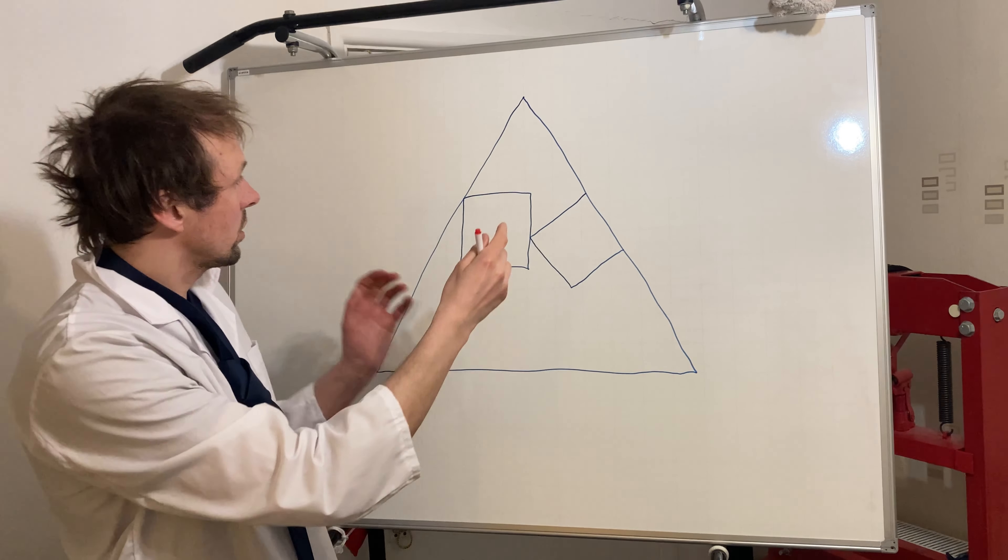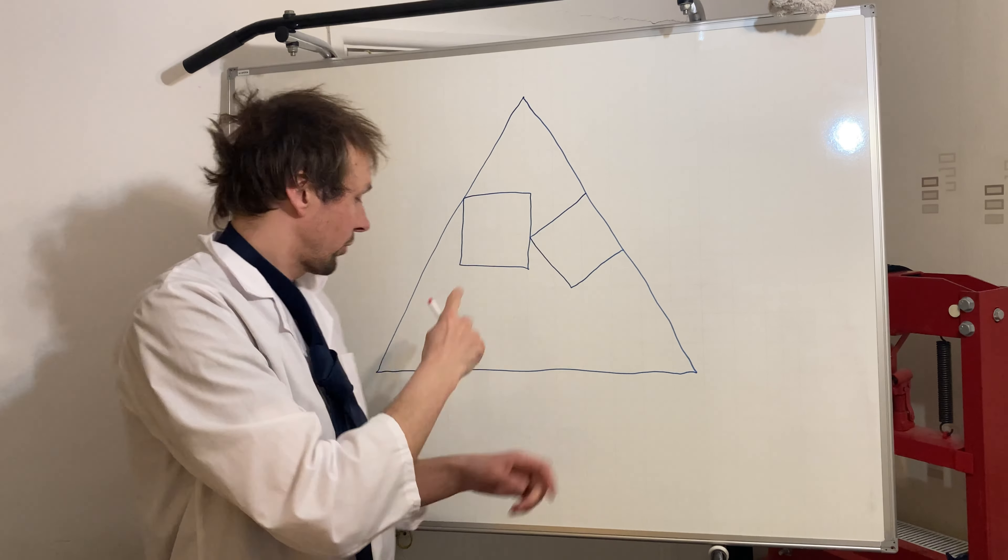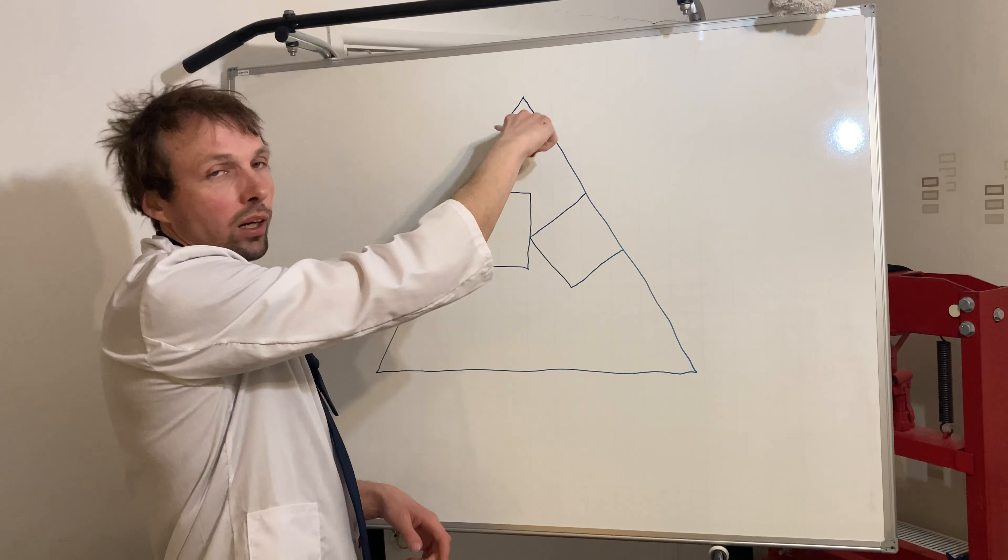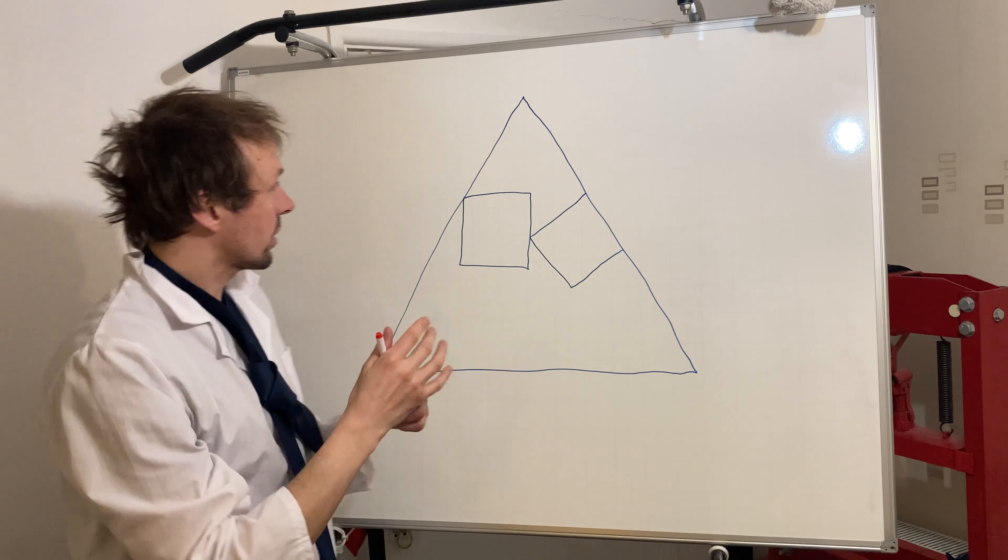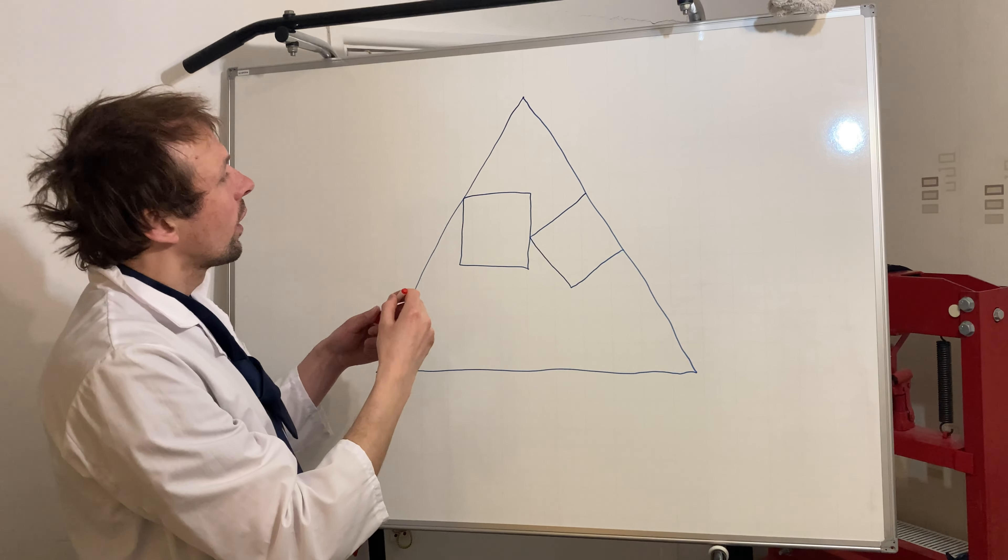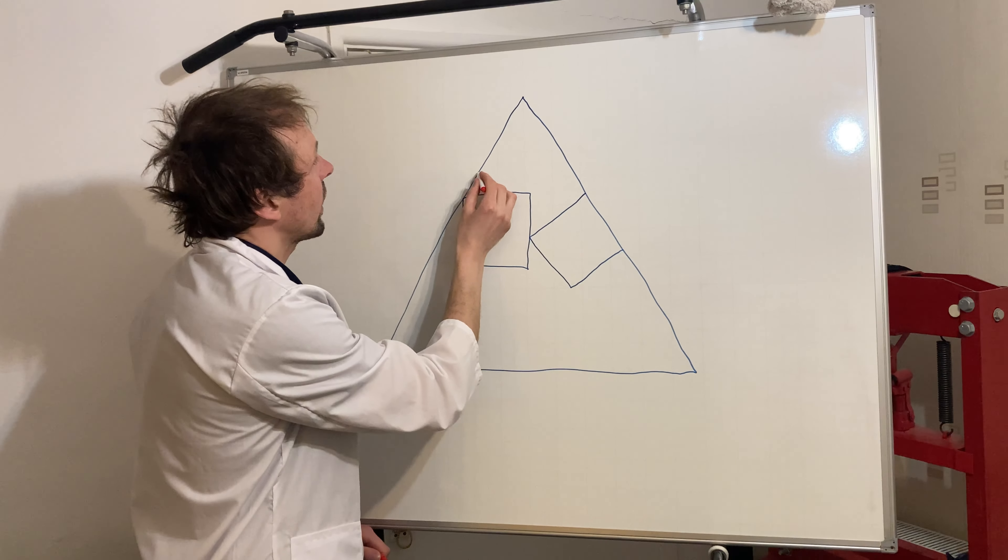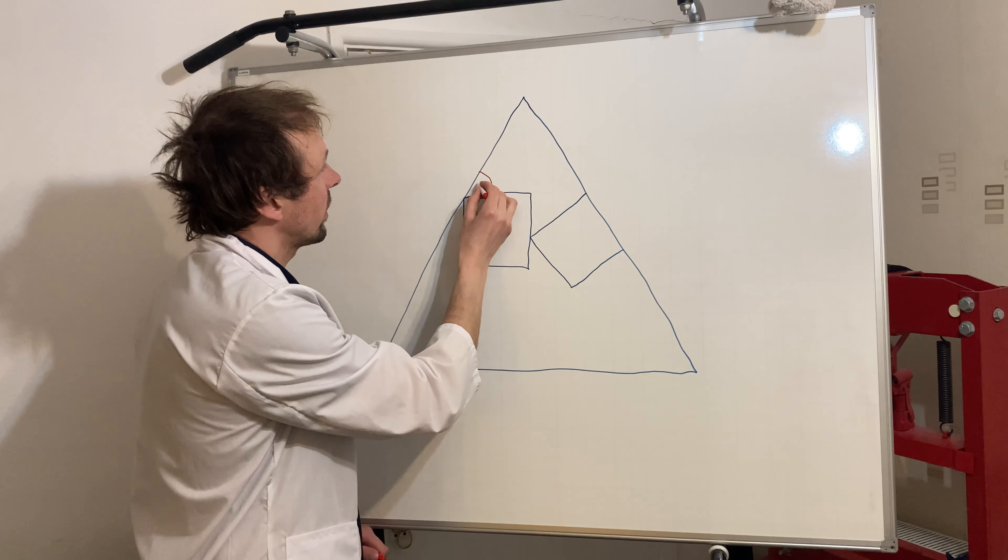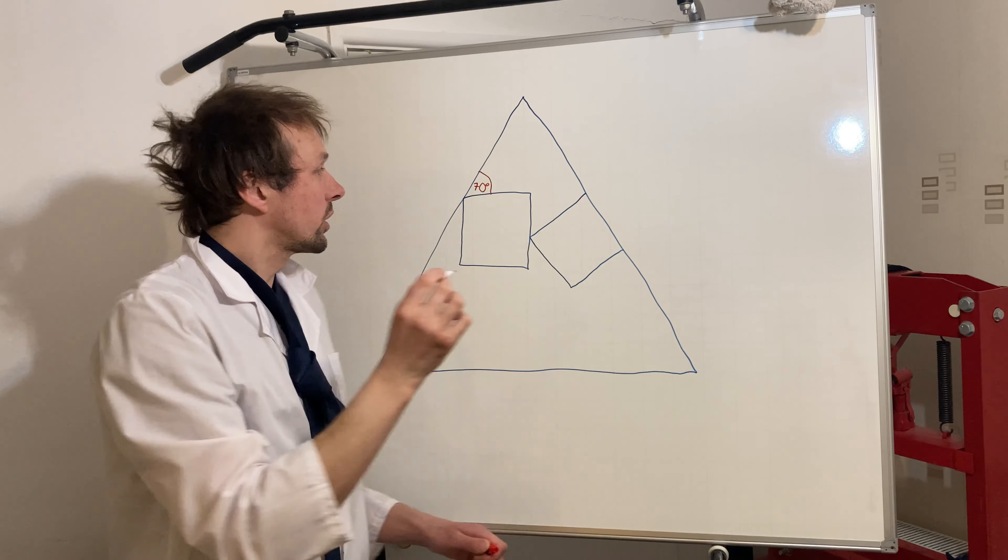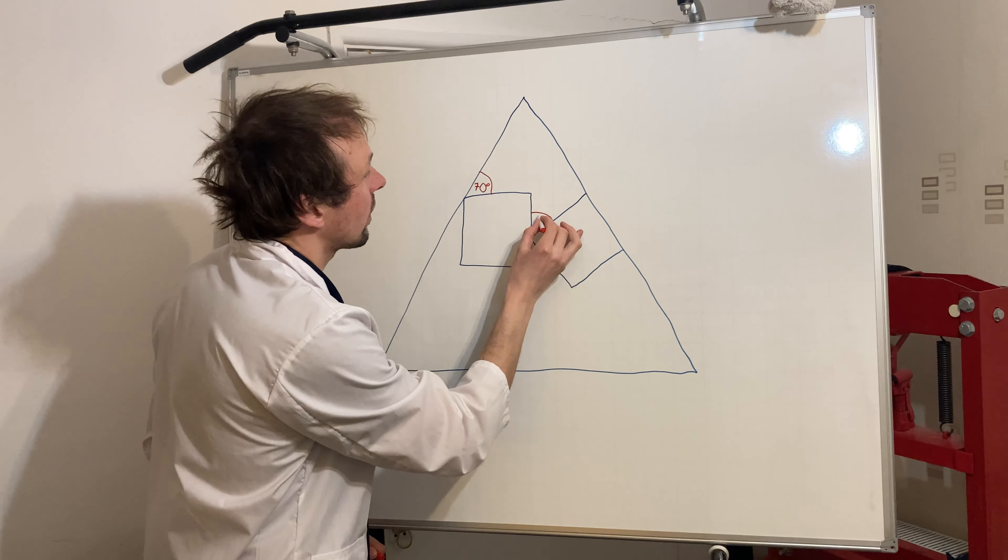So this is a regular triangle, like a perfect triangle where all three sides are equal lengths, therefore also all the angles are the same, 60 degrees each. And then there are two quadrilaterals inside, and they say that this angle here is 70 degrees. The question is, how big is this angle?